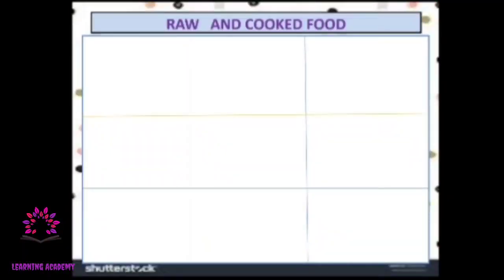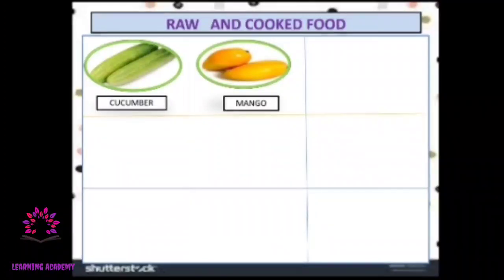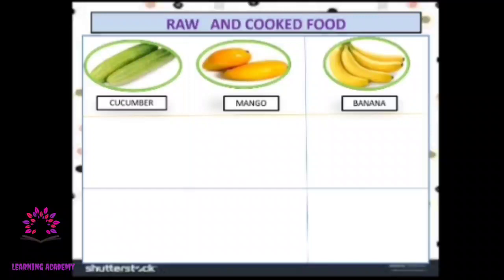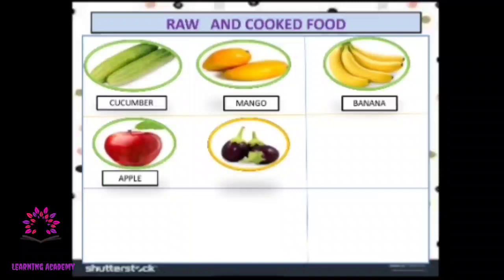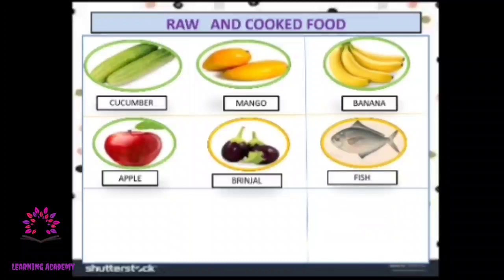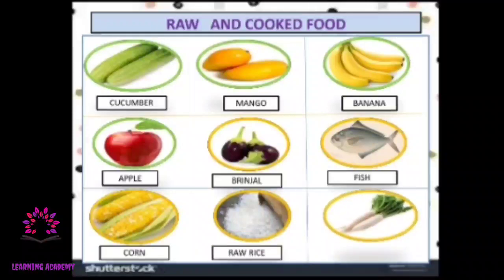Next we learn about raw and cooked food. This is cucumber — you can eat cucumber raw. What is this? Your favorite, right — mango! You can eat mango raw. Banana — you can also eat banana raw. Apple — you can eat these food items raw, no need to cook. But there are some food items which need to be cooked: brinjal, fish, corn, raw rice, radish, and vegetables — vegetables need to be cooked. Fruits you can eat raw.